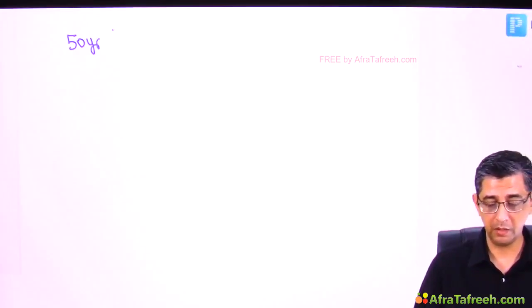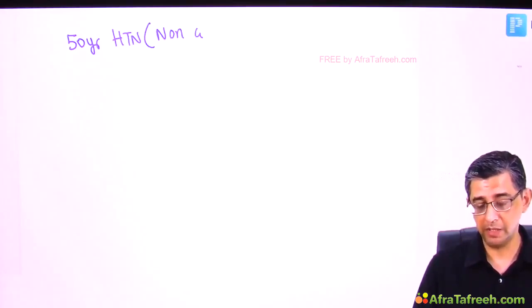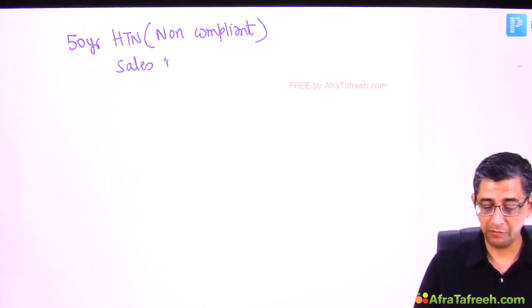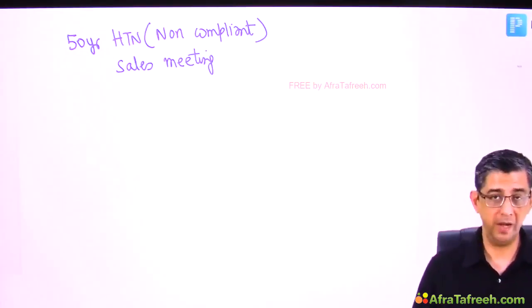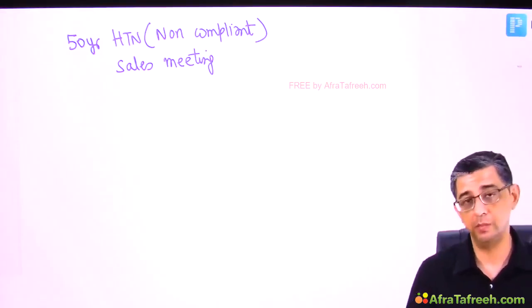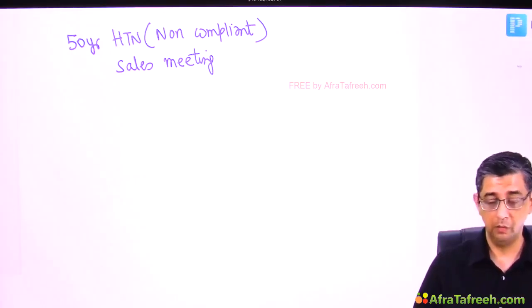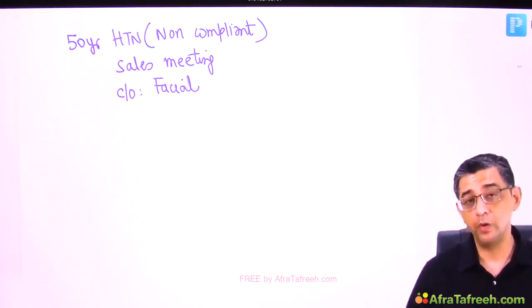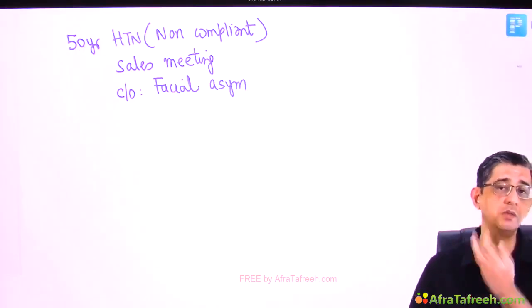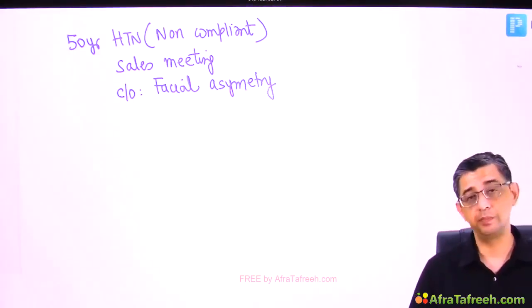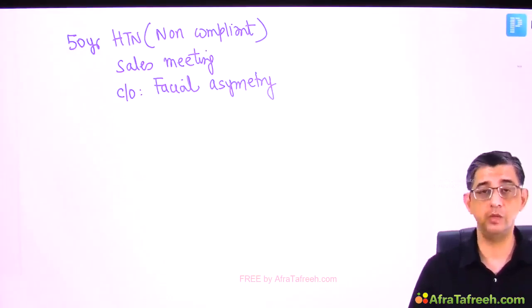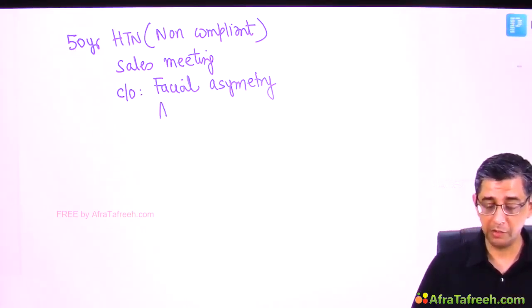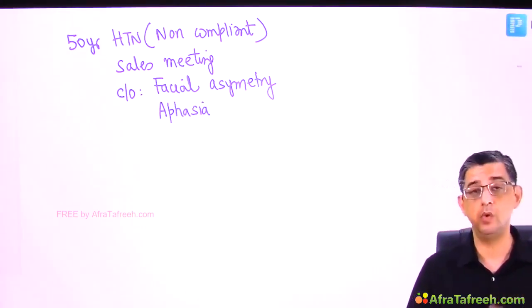Now, a case based on intra-parenchymal hemorrhage: a 50-year-old known hypertensive senior manager, non-compliant with medications. During a sales meeting he develops facial asymmetry — sagging of muscles on one side. His colleagues notice the funny look but don't realize the severity. Then he suddenly develops aphasia, goes quiet, and his lips are quivering — he is trying to speak but words won't come out.